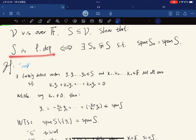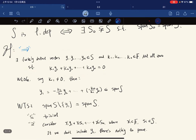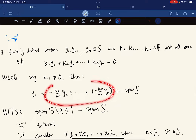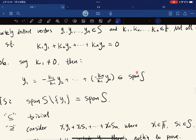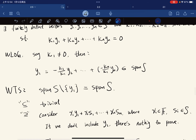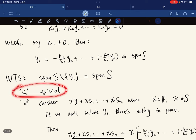For this direction, suppose it's dependent. We copy down the definition. Without loss of generality, we suppose kappa 1 is nonzero. Then we can isolate Y1 as this, and this is in span S. What do we want to show? If we can show this is equal to span S, then we're done. The existence is proven. This direction is trivial.